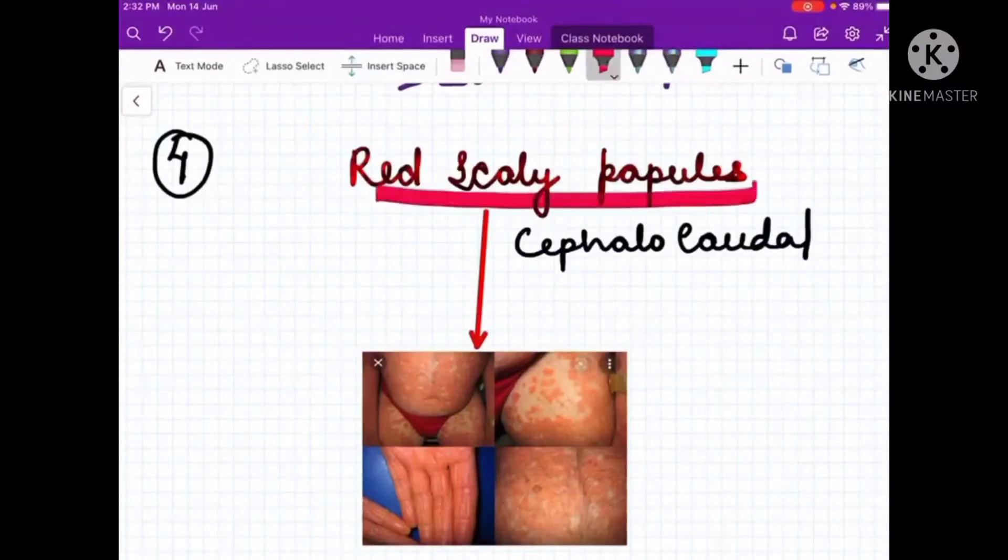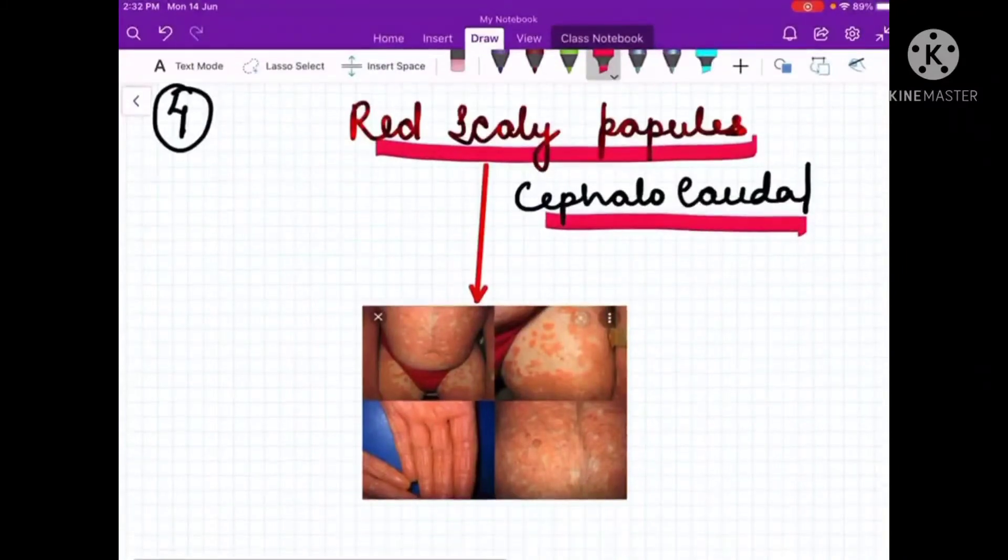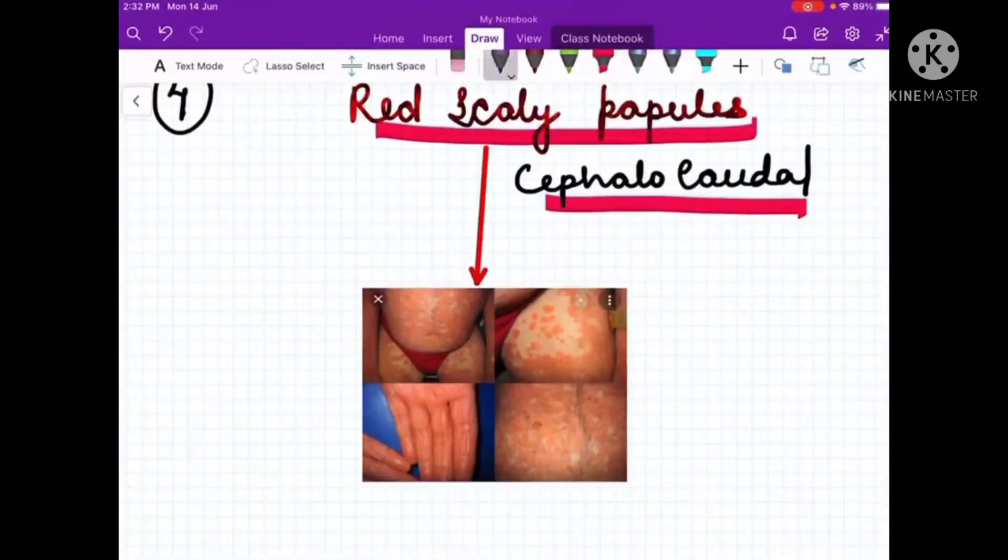When it spreads entirely throughout the body in a cephalocaudal fashion involving more than 90% of the skin, that is when we call it as erythroderma.